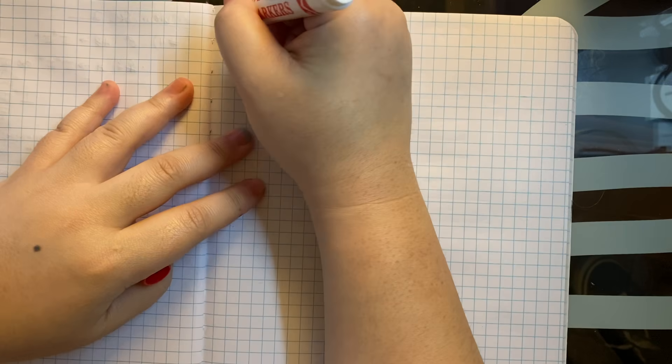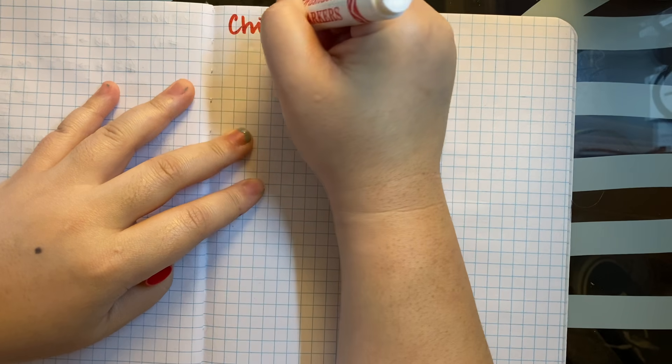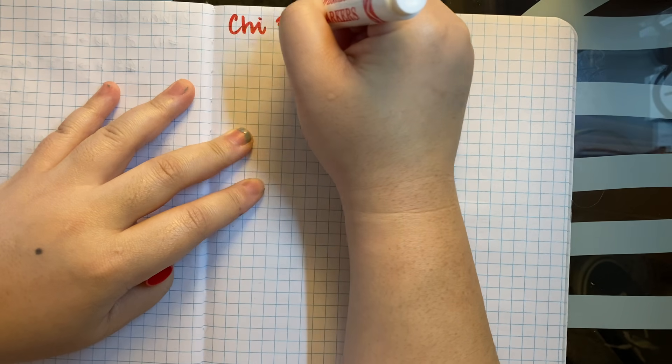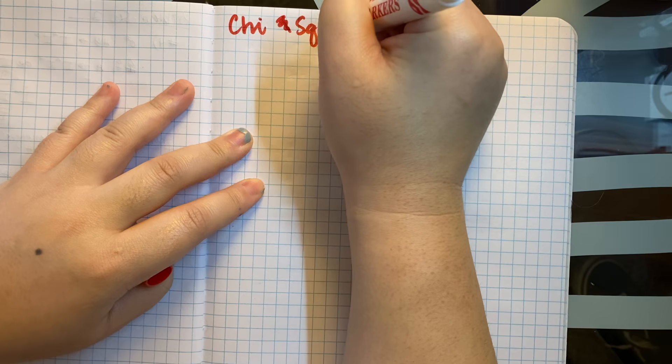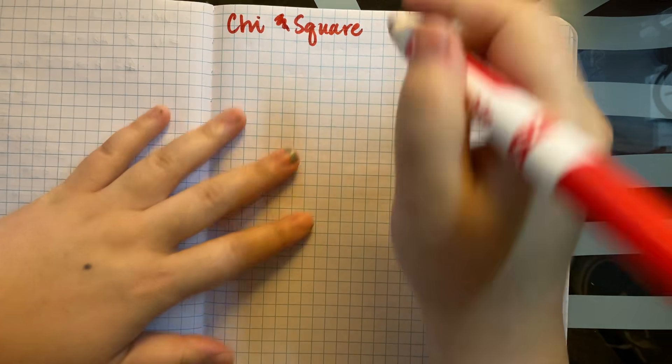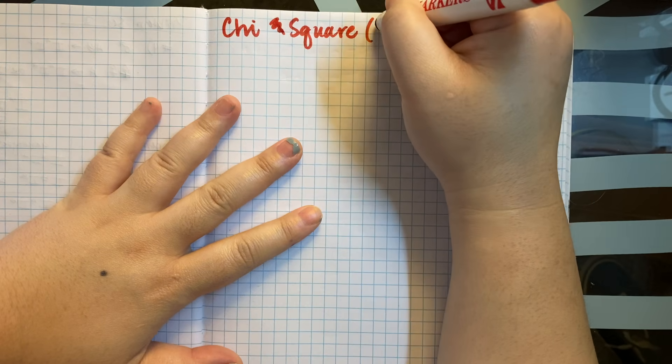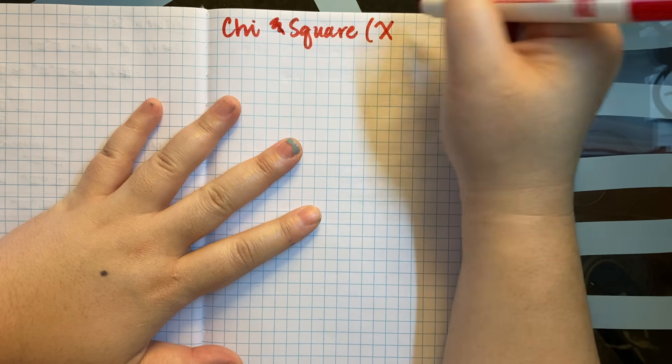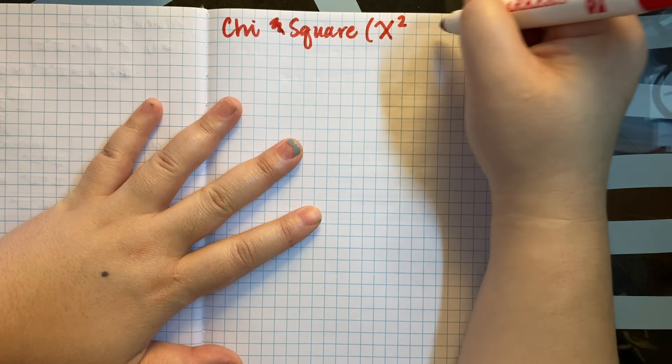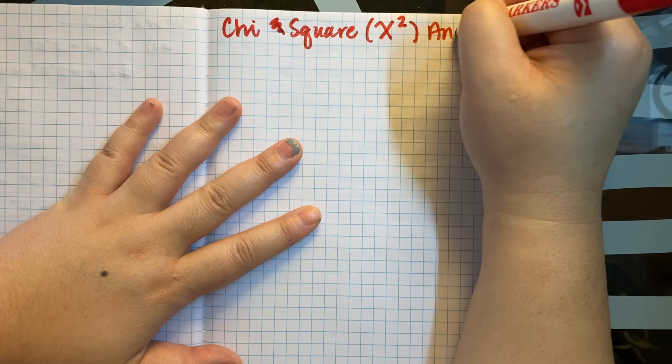Good morning guys. We're going to go over how to do chi-square analysis — we're doing some statistics today. Flip to the next page and I'm going to title this chi-square. We have a symbol that represents chi-square: we use the Greek symbol chi, which is like a little fancy x, and then we square it. So this is chi-square analysis.